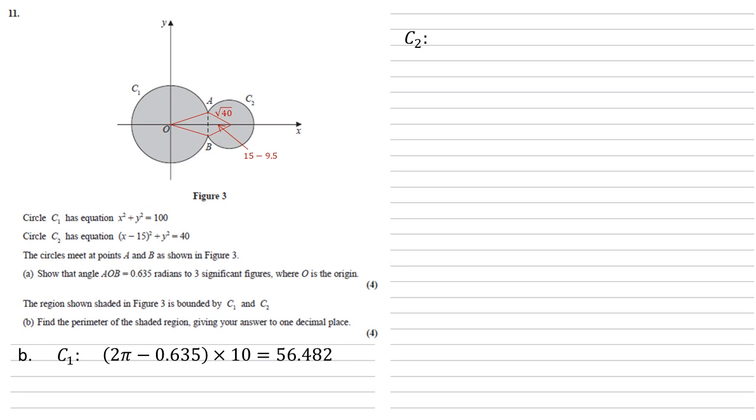We know that the distance from O to the line AB is 9.5. We worked that out in the last part. So we've got that triangle there. We can work out beta.